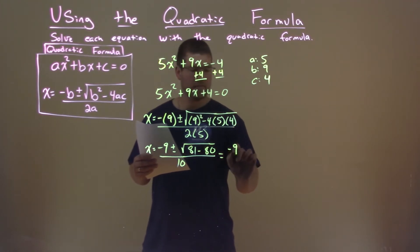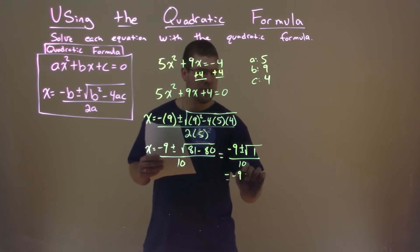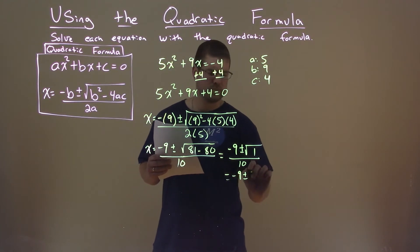Simplify that: negative 9, plus or minus... square root, what's 81 minus 80? Good old 1, over 10. Square root of 1 is 1, right? All over 10 here.